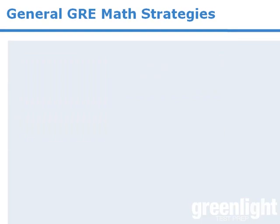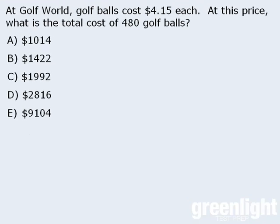To see how, let's begin with a relatively simple question. Golf World sells golf balls for $4.15 each, and we want to find the cost of 480 balls. The approach you learned in school was to multiply $4.15 by 480. But doing this would fall under the heading of performing lengthy calculations, and we know that the GRE is not designed to test our ability to perform lengthy calculations. We also know that most GRE math questions can be solved using more than one approach. So even though we may be tempted to simply use the on-screen calculator, we should recognize that doing so can still waste precious time.